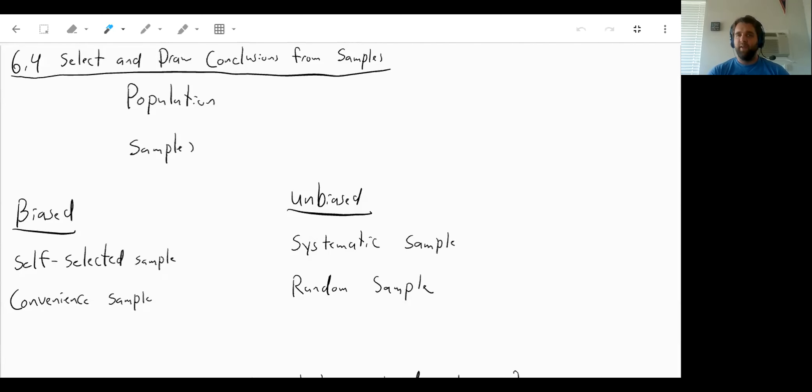So the population of the United States is 300 and some million people. The population of our school is, I think, 300 to 400 some people. The population of Montana, I think, is like a third of the number of cows that they have. It's some really weird number like that.